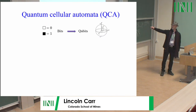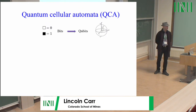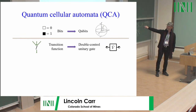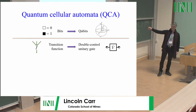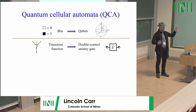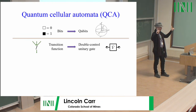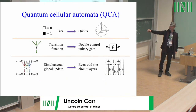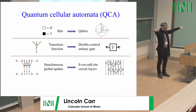The first thing you do is replace bits with quantum bits — qubits on the Bloch sphere with two angles. Then we replace the transition function with a double-controlled unitary gate: I rotate somewhere on the Bloch sphere depending on the condition of the neighbors. In particular, I'll be interested in a spin-balance condition — a 1-0 or a 0-1 neighbor configuration.